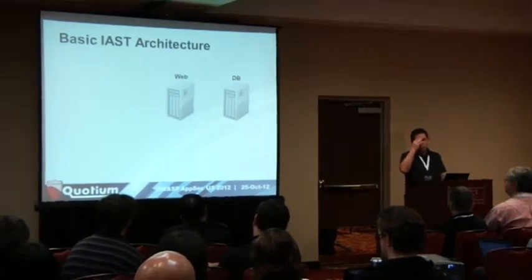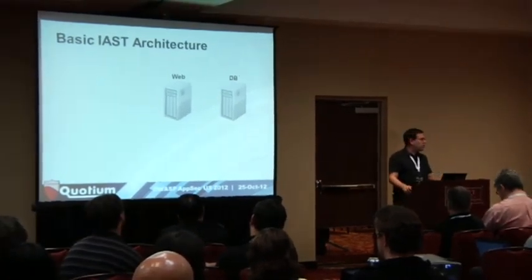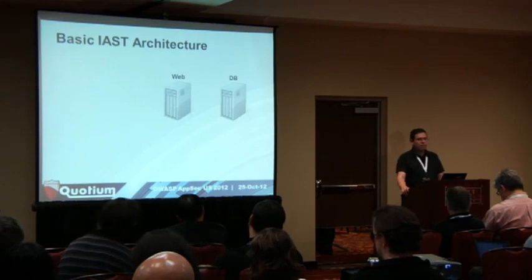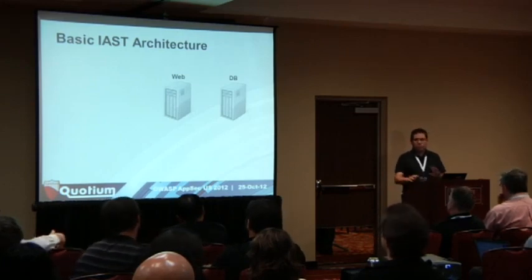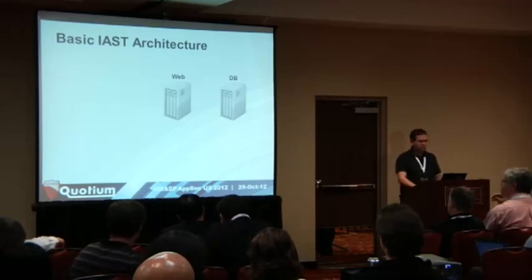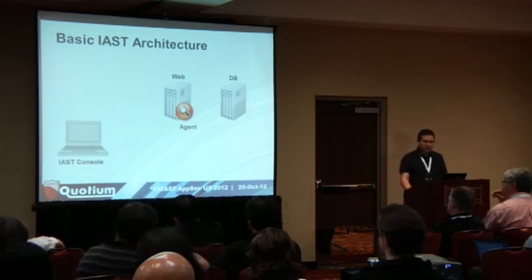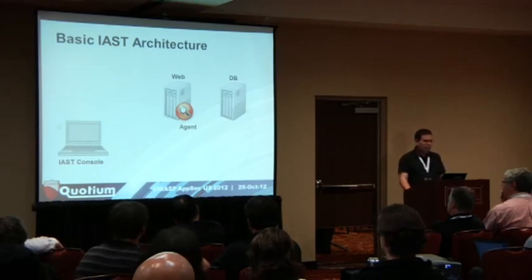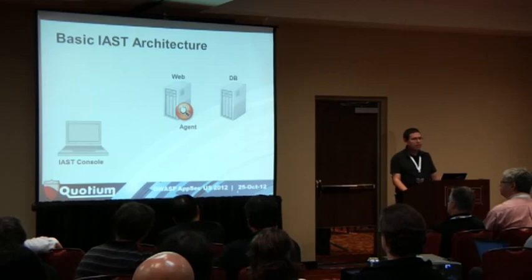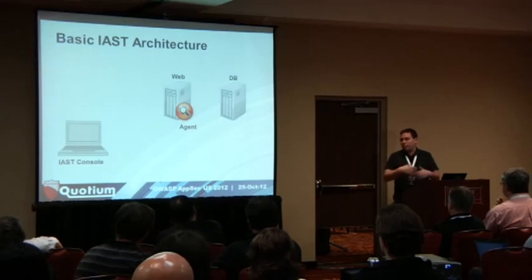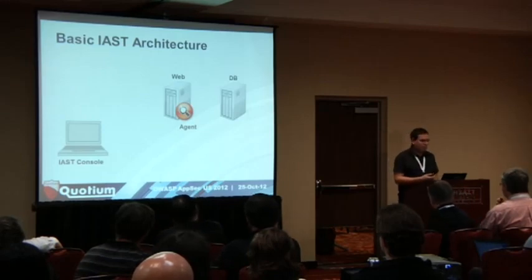Let's look at the basic IAST architecture. We have a web server and a database - a very simple single-tier application. The IAST solution consists of two parts: an agent that sits on the application server, and a console that generates HTTP traffic. In some IAST solutions they work together; in some the console can be independent. But there must be something that generates HTTP requests because we analyze the running code - the code has to run and it needs HTTP requests for that.